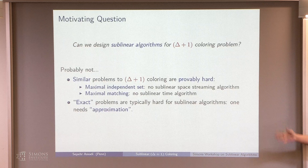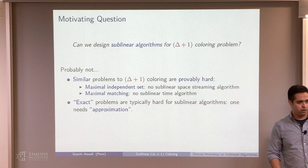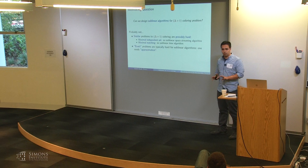Any questions so far? — For the maximal independence result, where is this from? — These are both in this paper. — When you say sublinear, is it the number of vertices or edges? — Edges. Our output size is proportional to the number of vertices, so I'm talking about sublinear in the number of edges.